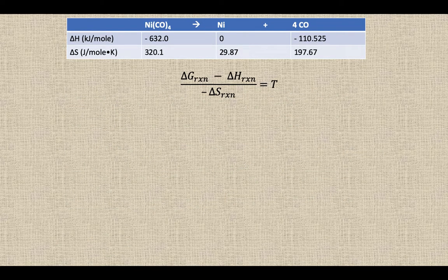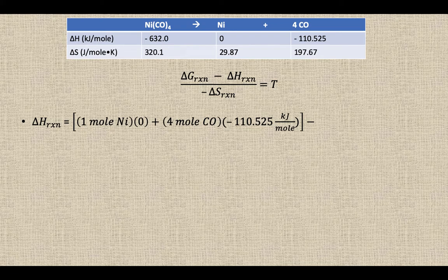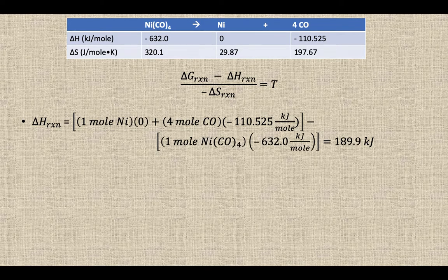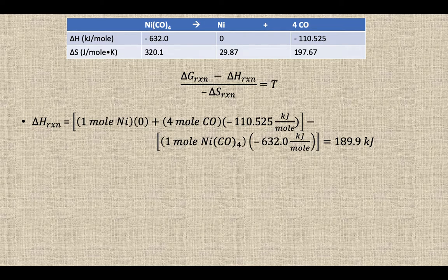So if we take that equation, and we find the delta H for the reaction by doing the one mole of nickel times its H value of zero plus four moles of carbon monoxide times its H value, subtract the H values of our reactants, and we get a positive 189.9 kilojoules. It's an endothermic reaction.